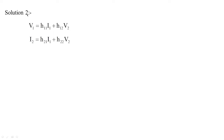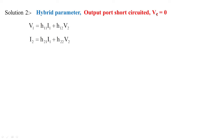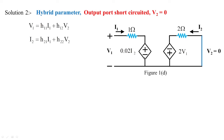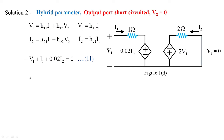Solution 2 uses the actual approach for hybrid parameters. To find h11 and h21, the output port is short-circuited (v2 = 0), giving figure 1d. From standard hybrid parameter equations, v1 = h11·i1 and i2 = h21·i1. Applying KVL to the input loop: minus v1 + 1·i1 + 0.02·i2 = 0, framed as equation 11.